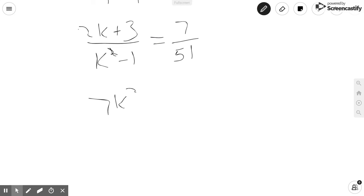So we know that 7k squared minus 7 equals 102k plus 153.